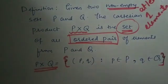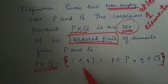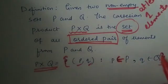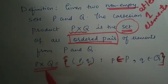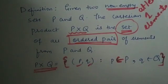Ordered pairs are written in round brackets separated by commas, and the order of elements matters. The first element p belongs to set P and the second element q belongs to set Q. So Cartesian product P × Q is the set which contains all ordered pairs where the first element comes from set P and the second element comes from set Q. This is the mathematical definition of Cartesian product.